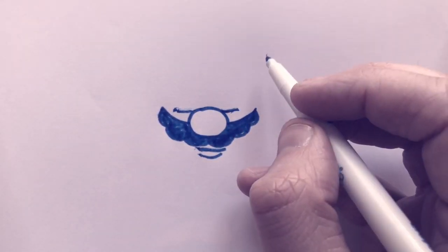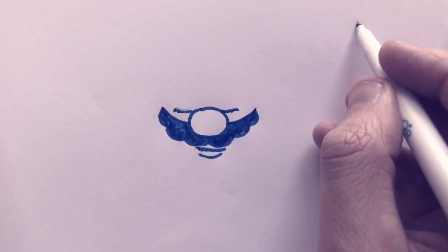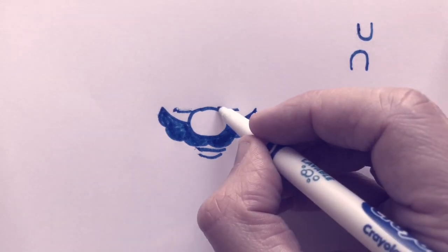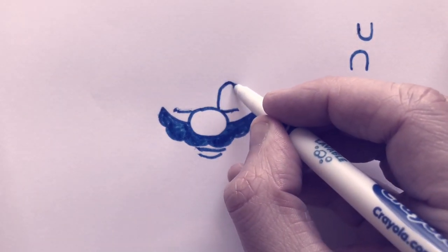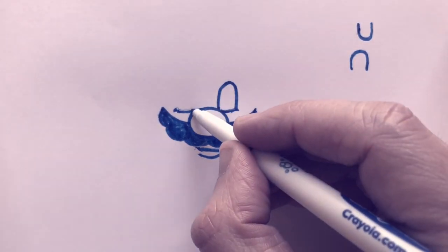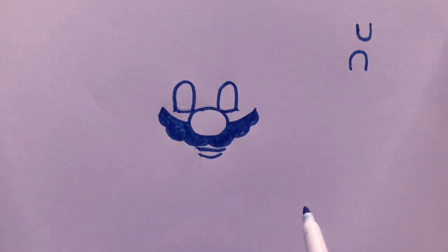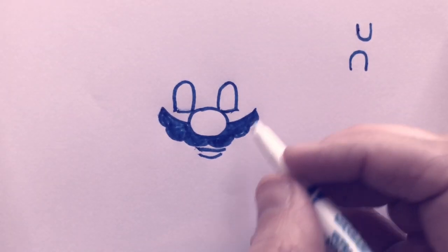Now we're going to do some letter U's. The letter U, but we're going to do it upside down for the tops of the eyes. Try to keep them symmetrical.